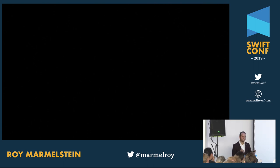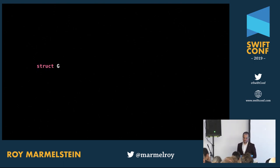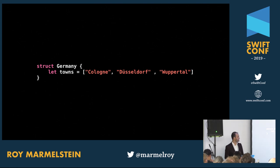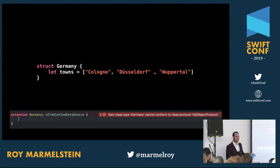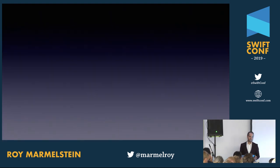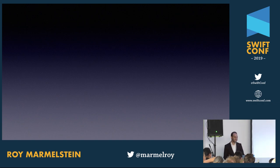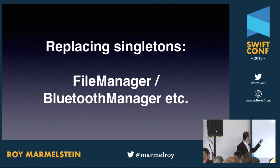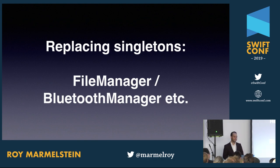If you want to interact with Objective-C — for example conforming to UITableViewDataSource — anything that interacts with Objective-C needs to be a class. Also, if you're replacing singletons with dependency injection, structs aren't great for things like a file manager or Bluetooth manager where there's only one in the system. We want a class for that — not something that gets created again and again.